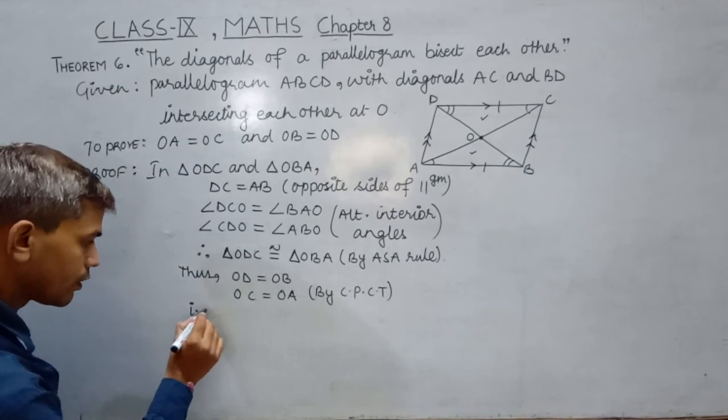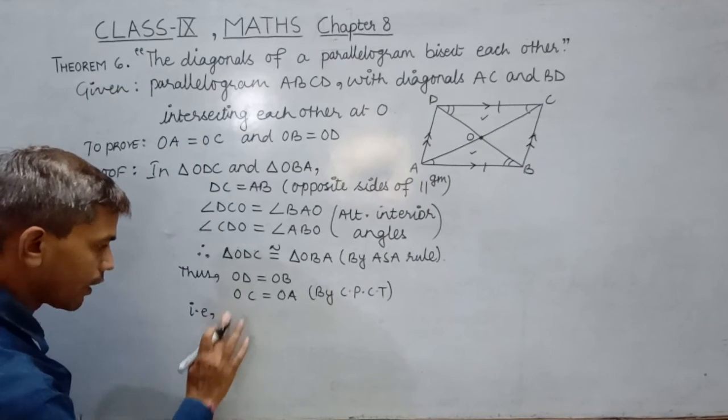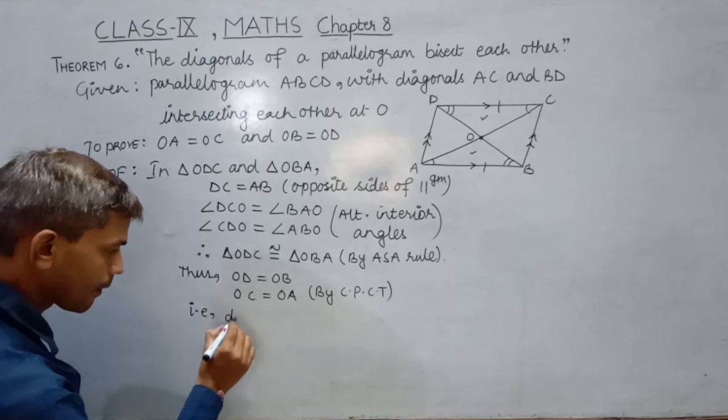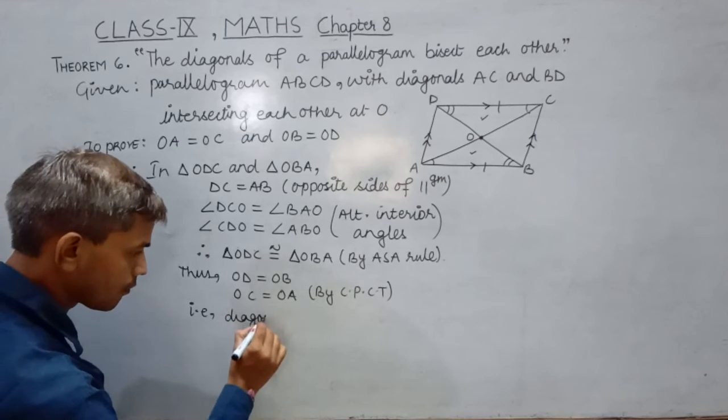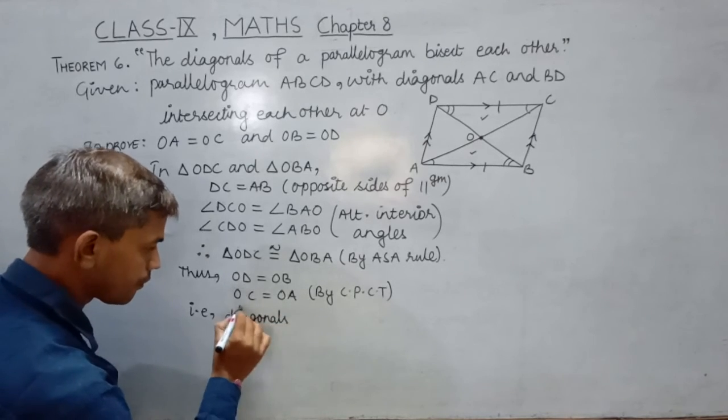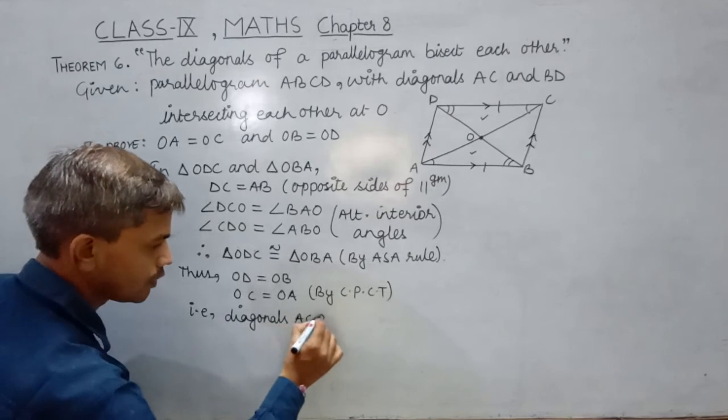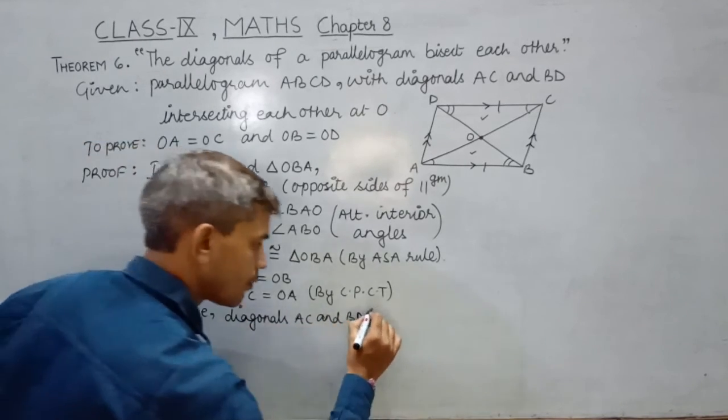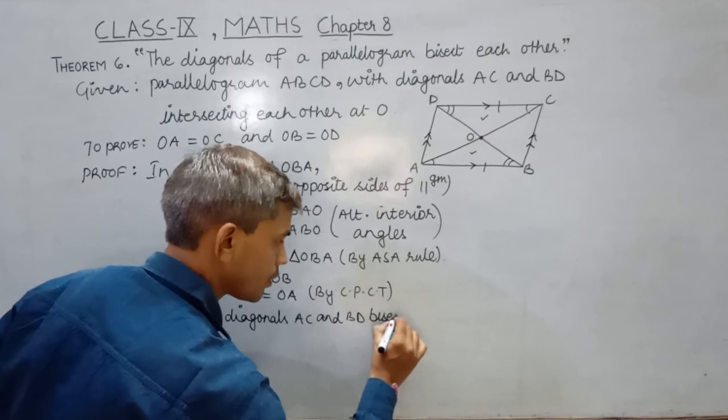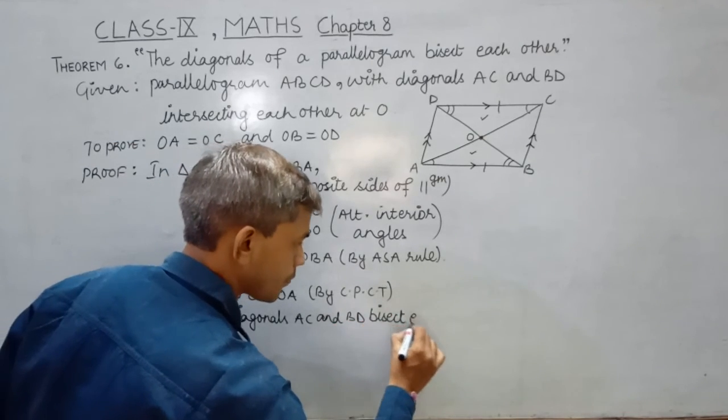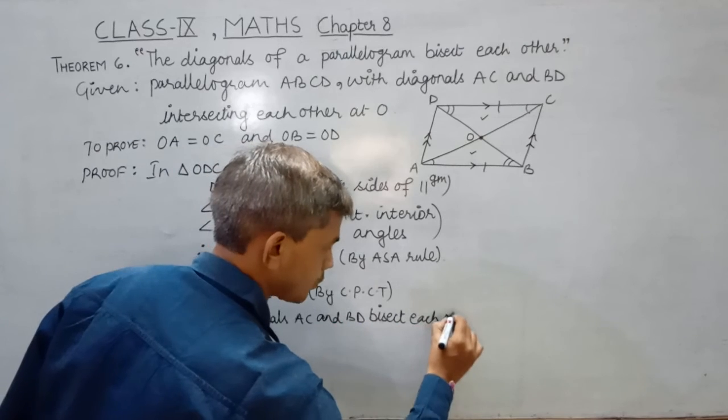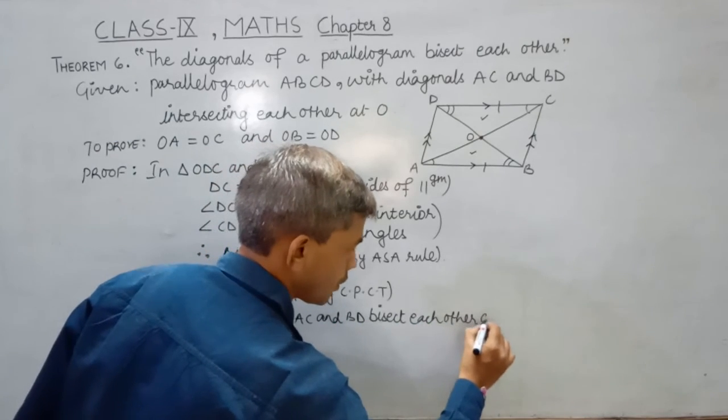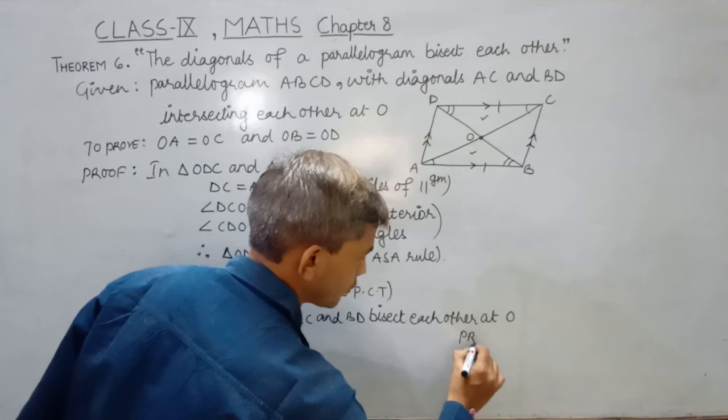That is, diagonals AC and BD bisect each other at O. That's the proof.